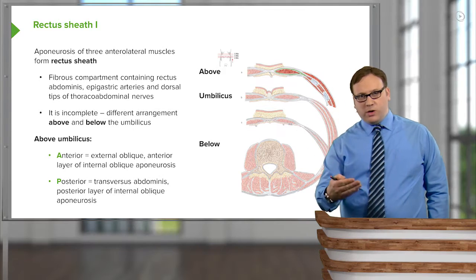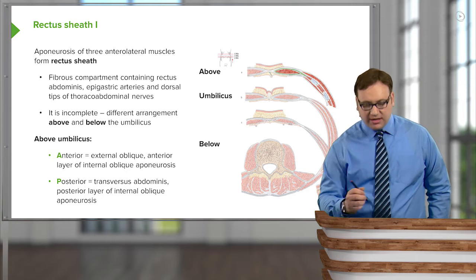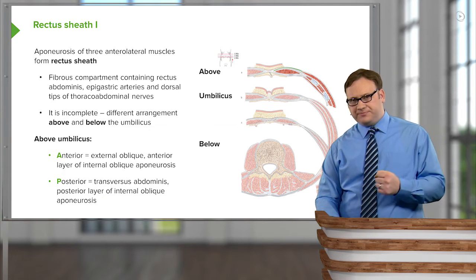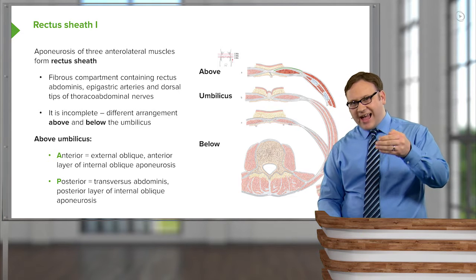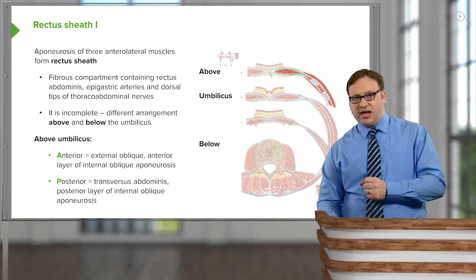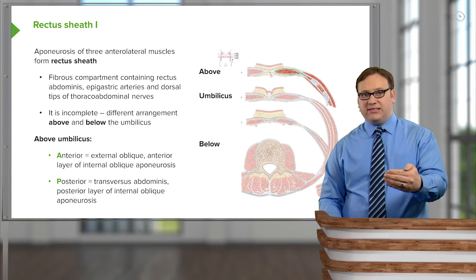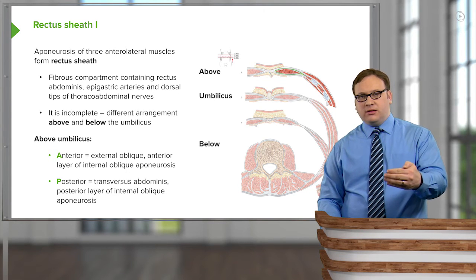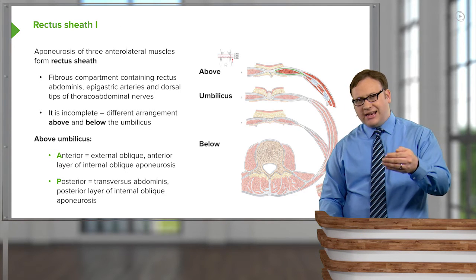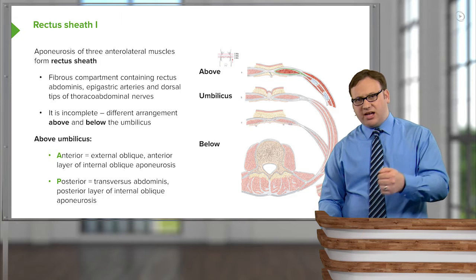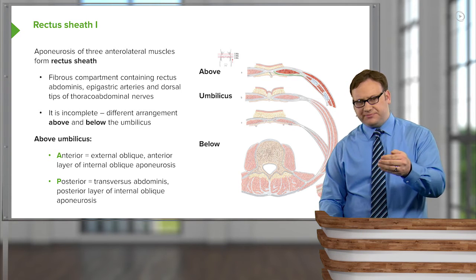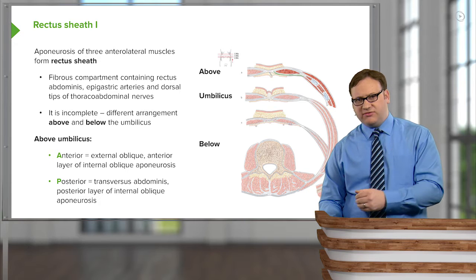If we were to go from anterior to posterior, we'd find the aponeurosis of external oblique. We'd then find the anterior lamina, or the anterior layer, of internal oblique. We'd then find rectus abdominus. Carrying on posterior, we'd then have the posterior lamina or layer of internal oblique. And then we'd have the aponeurosis of transversus abdominus.